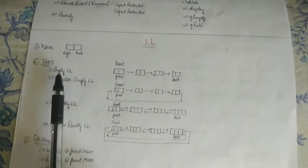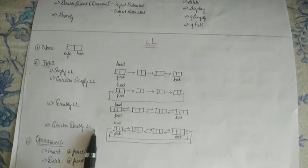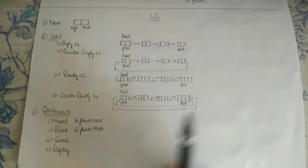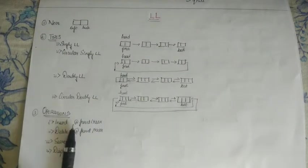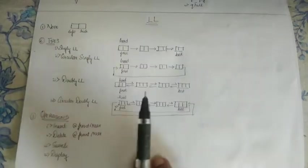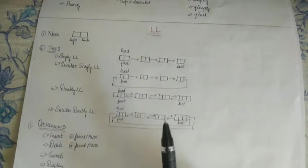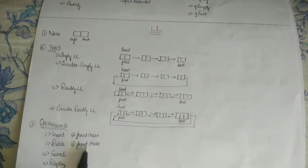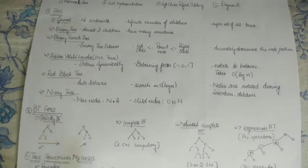So overall we have four types: singly link list, circular singly link list, doubly link list and circular doubly link list. Moving on to the operations that can be performed on link list. Let's not just insertion at front or rear, that is to insert a node at the front to the first node or to the last node that is the rear. And then delete a node, delete the first node or the last node, that is delete at front or rear. Then you can search or display. So moving on. Let's move on to trees.